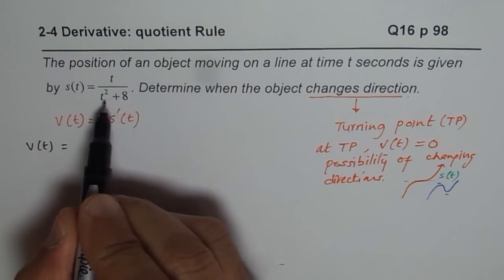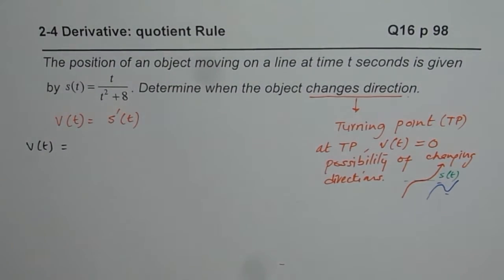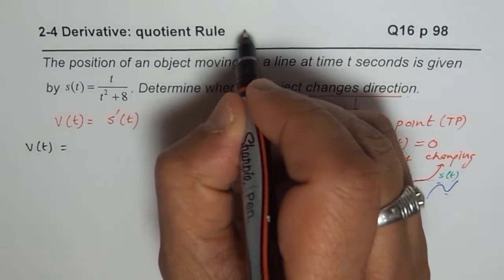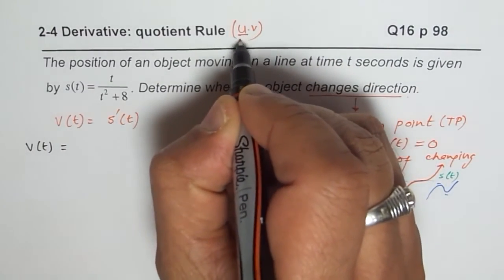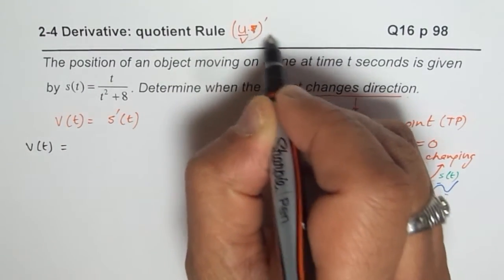The quotient rule, as you remember, let me write down here. The quotient rule is, if you are trying derivative of u over v,